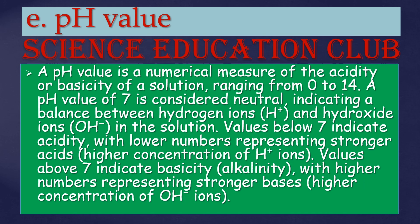pH value: a pH value is a numerical measure of the acidity or basicity of a solution, ranging from 0 to 14. A pH value of 7 is considered neutral, indicating a balance between hydrogen ions and hydroxide ions. Values below 7 indicate acidity, with lower numbers representing strong acids. Values above 7 indicate basicity, with higher numbers representing stronger bases.